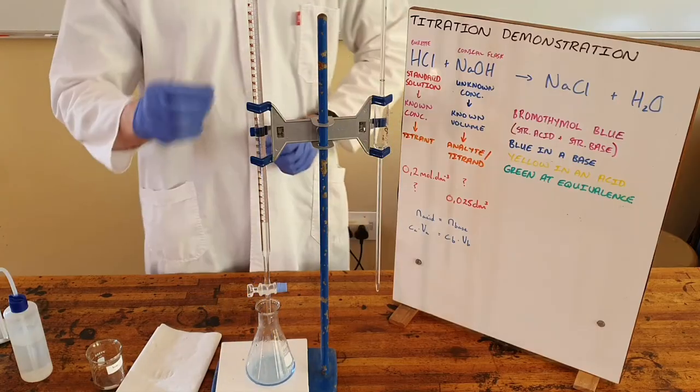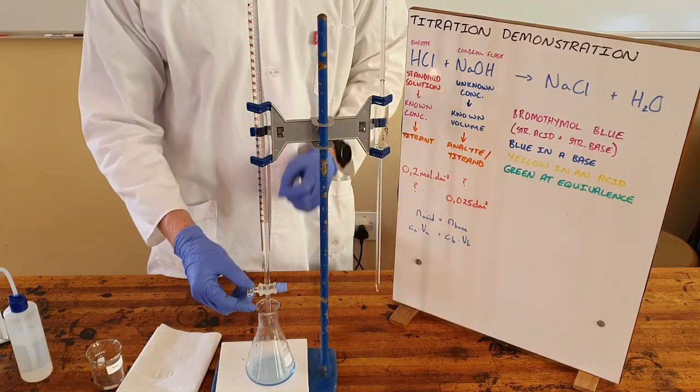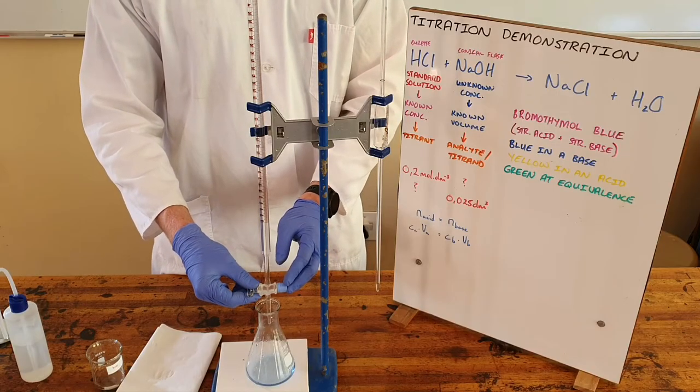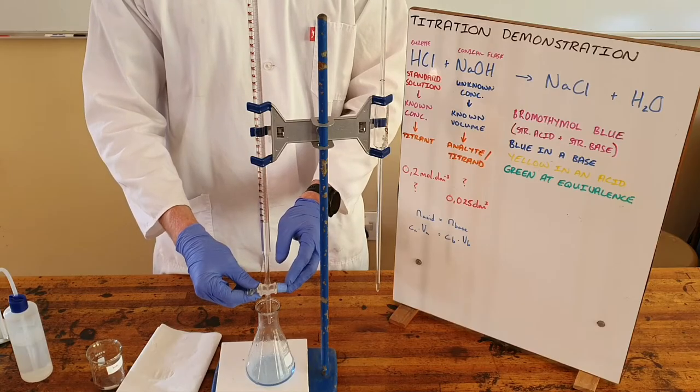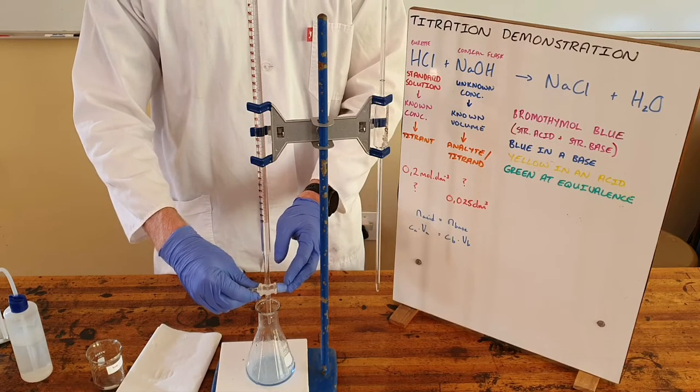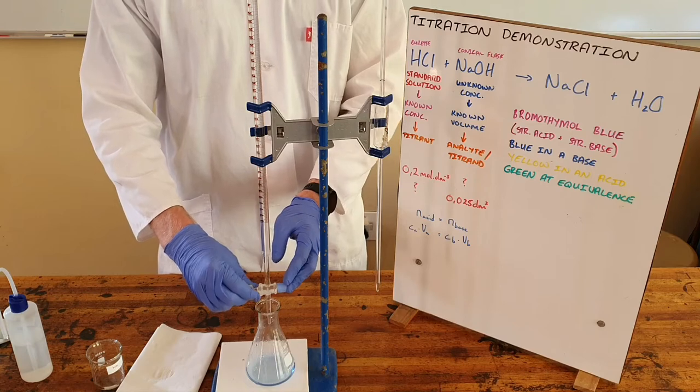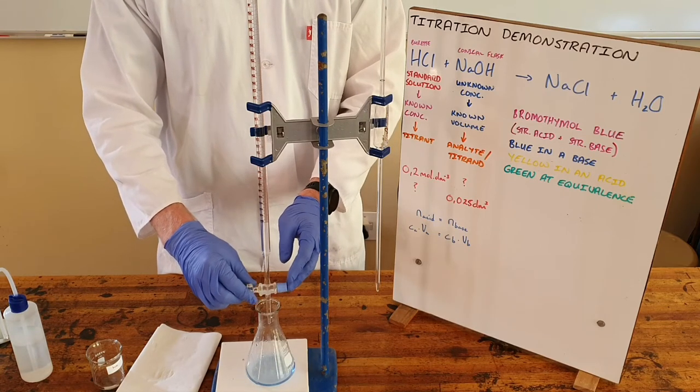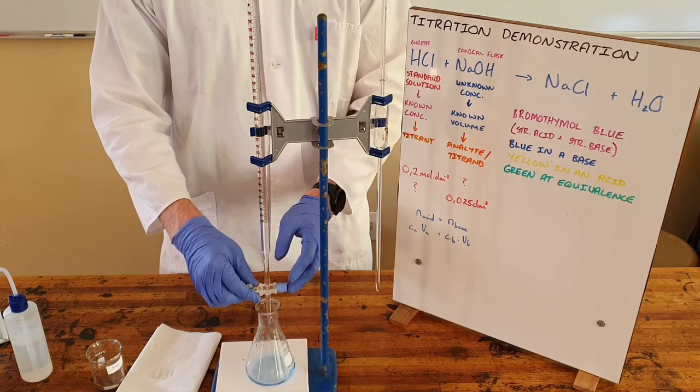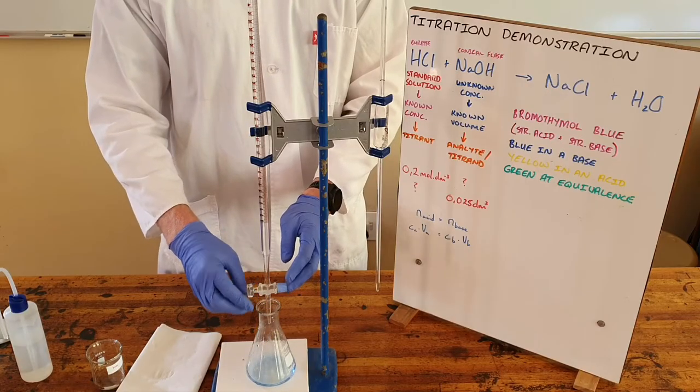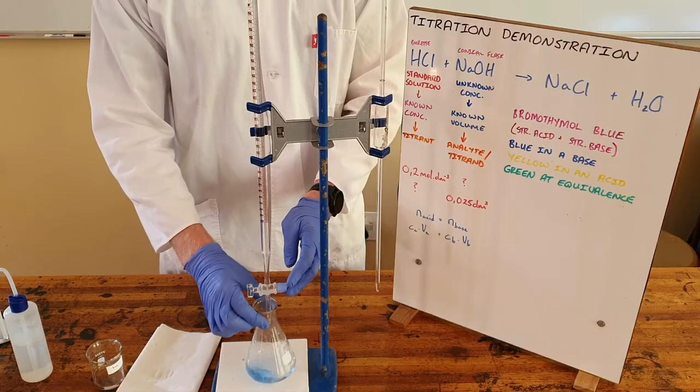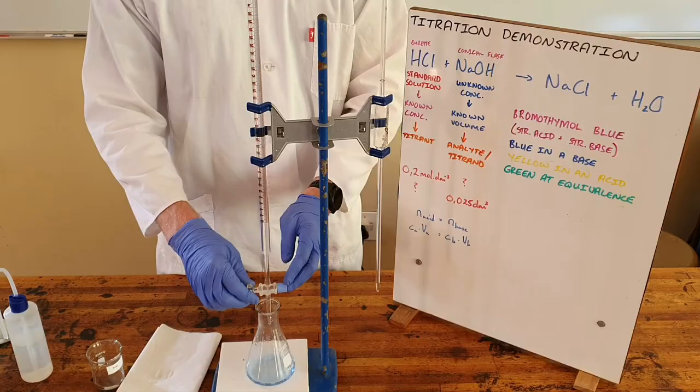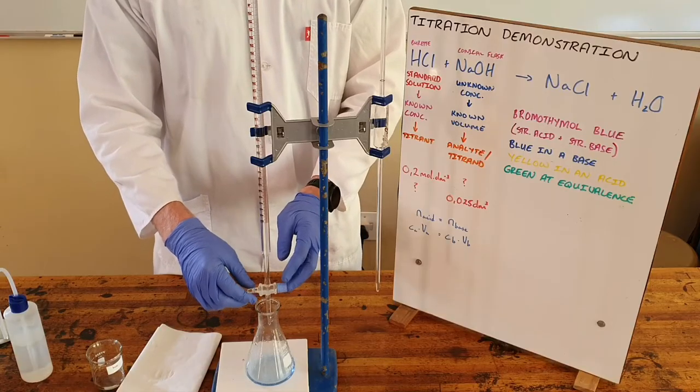So the titration is done with our burette here where we use a stopcock valve or tap to deposit an exact quantity of the acid or the titrant present. Now we have done a rough titration already. A rough titration is one where you allow this to run a bit faster so that you get an idea of where you expect the equivalence point to be. In this case we found in our rough titration equivalence point to be around 12.5 milliliters.